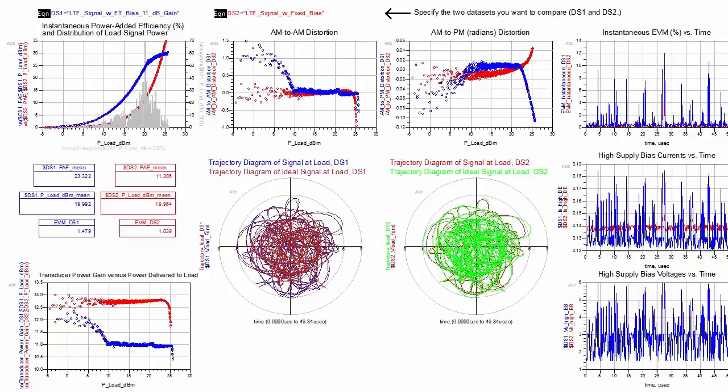This data display compares results of a power amplifier simulated with envelope tracking applied and with constant bias applied. With envelope tracking applied, you can look at relatively simple results like PAE, AM to AM distortion, AM to PM distortion, EVM, and other characteristics.